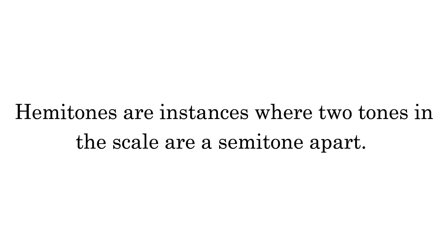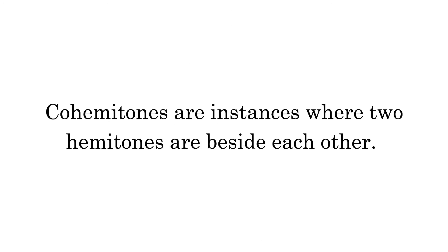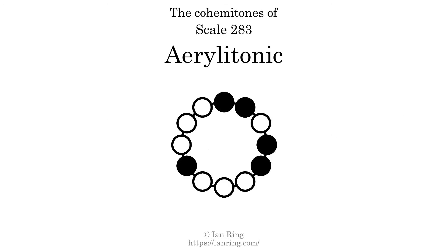Hemitones are instances where two tones in the scale are a semitone apart. This scale has two hemitones. They are at positions here and here. Co-hemitones are instances where two hemitones are beside each other. This scale has no co-hemitones.